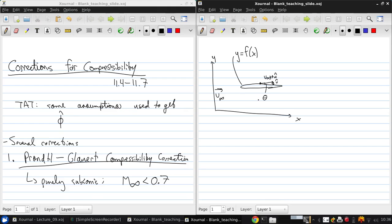So, we have a thin airfoil and a small angle of attack, so that the assumptions that u hat and v hat are small compared to v infinity hold.